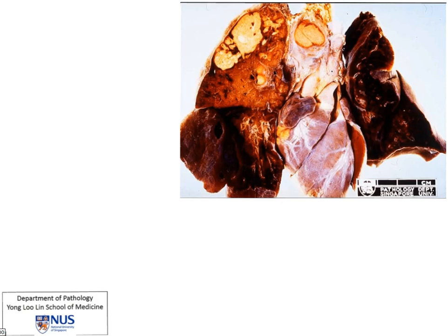Now what is very obviously abnormal here is that in the upper lobe of the right lung there is this geographic yellowish area. And we can see another focus here, a little bit of cavity formation here, and we see that the same process is present in the abnormal mediastinal lymph nodes. Now this gross appearance is what we would usually see in caseous necrosis.